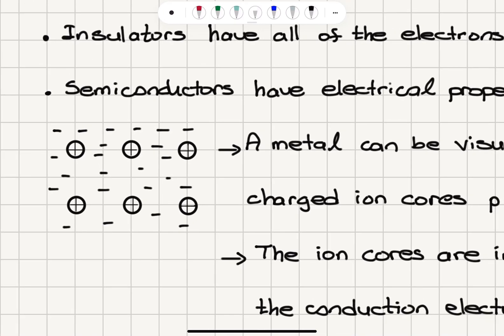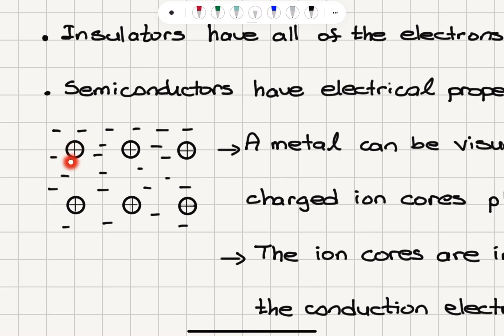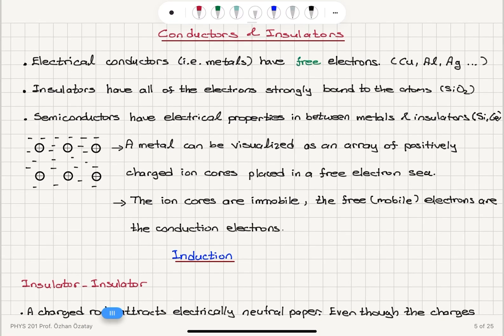How do we visualize a metal? We can say that we have immobile positively charged cores — these are ions, basically atoms that have had their valence electrons detached. Those valence electrons move freely inside the material, forming a free electron sea. So we have a combination of immobile positively charged ion cores and a free electron sea.